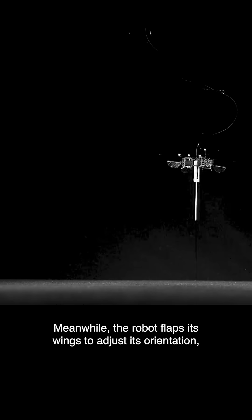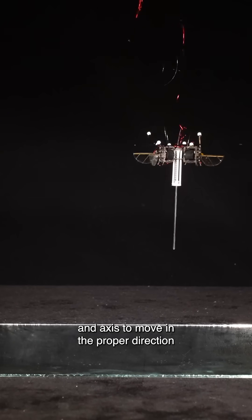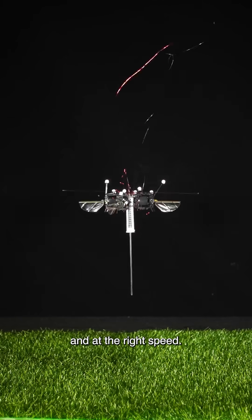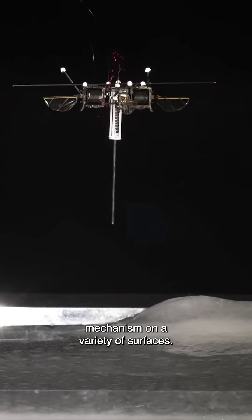Meanwhile, the robot flaps its wings to adjust its orientation, ensuring it strikes the ground at the correct angle and axis to move in the proper direction and at the right speed.